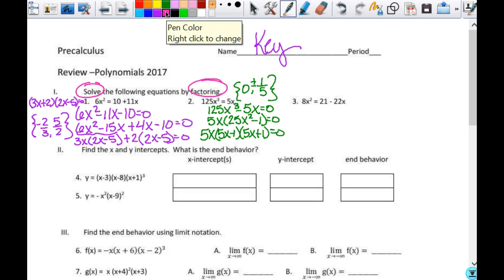Then this last one, set equal to zero, 8x squared plus 22x minus 21 equals zero. So I try to factor out a GCF, and there isn't one. So 8 times negative 21 is 168. I have to say negative 168. So the signs will be different.